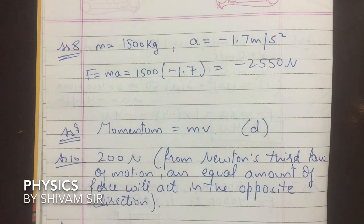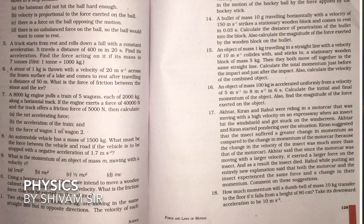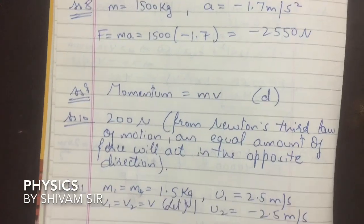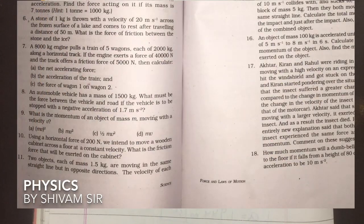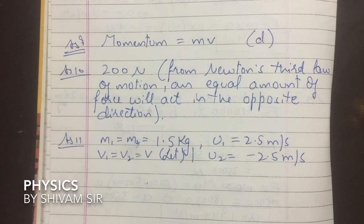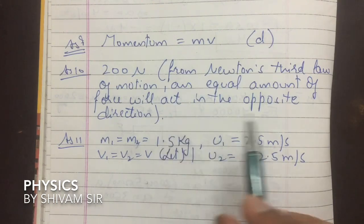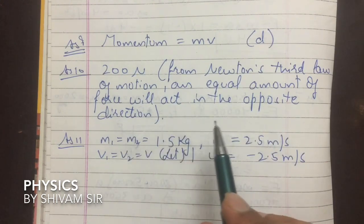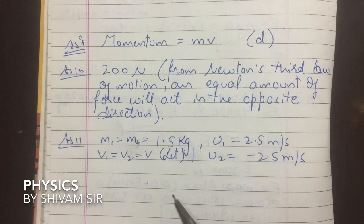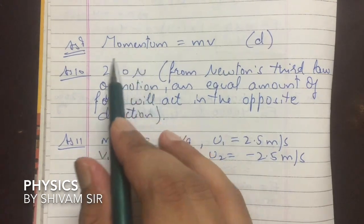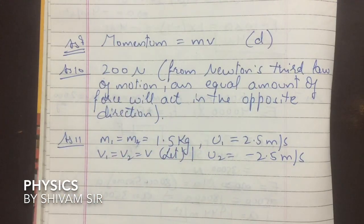Question 9: What is the momentum of an object of mass m moving with velocity v? Momentum = mass × velocity. Option D is correct. Question 10: Using a horizontal force of 200 N, we intend to move a wooden cabinet across the floor at constant velocity. The friction force exerted on the cabinet will also be 200 N, from Newton's third law — for every action there is an equal and opposite reaction.